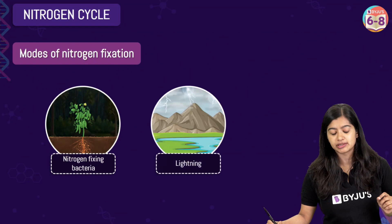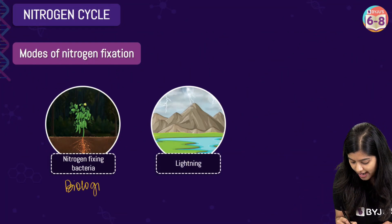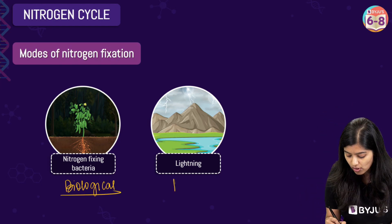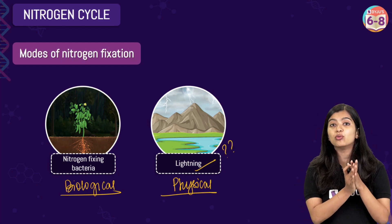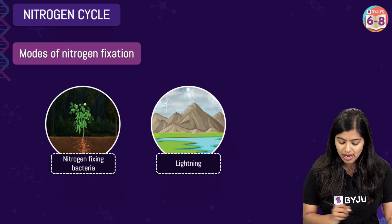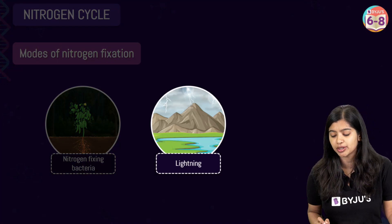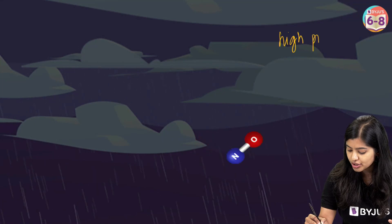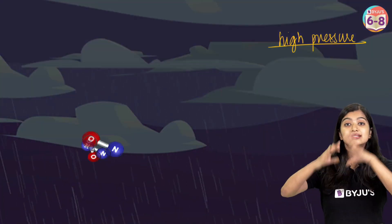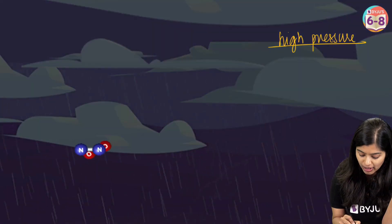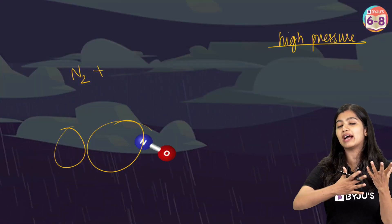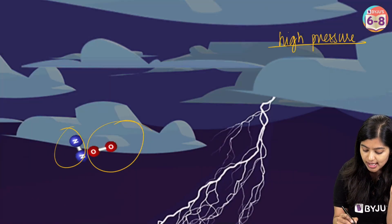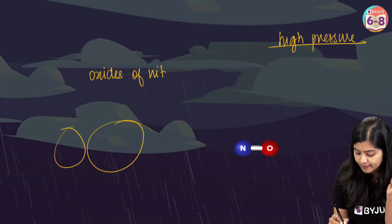There are two ways in which nitrogen fixation happens. One is biological fixation, wherein some nitrogen-fixing bacteria play a key role. The other is a physical form of fixation involving lightning. During lightning, under high-pressure conditions in the atmosphere, atmospheric nitrogen reacts with oxygen to form oxides of nitrogen such as nitrogen dioxide.